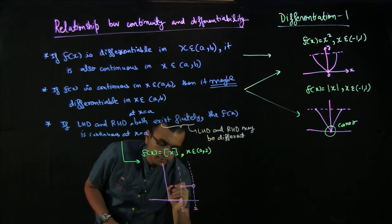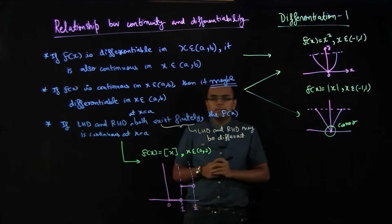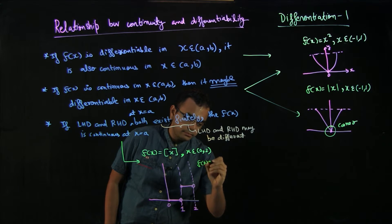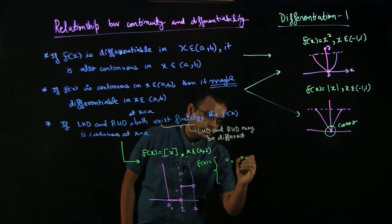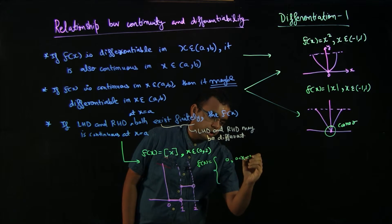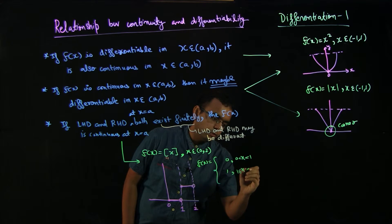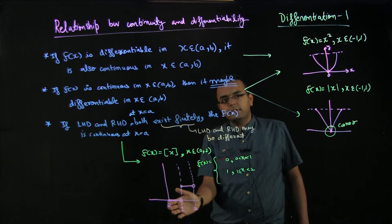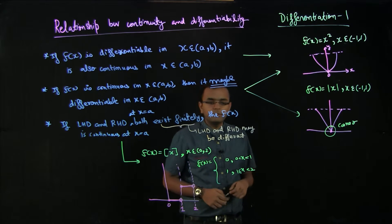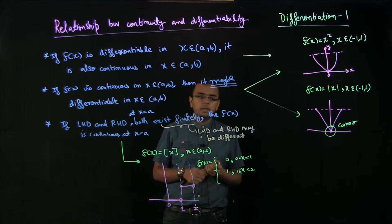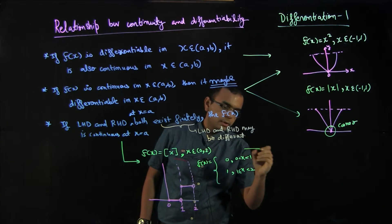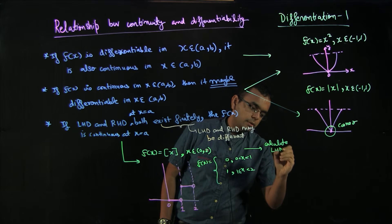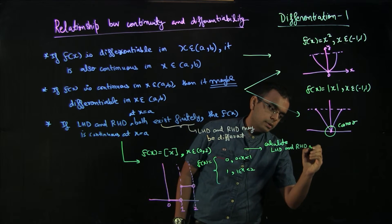The graph has f(x) = 0 for 0 ≤ x < 1 and f(x) = 1 for 1 ≤ x ≤ 2. So f(1) = 1 and f(1⁻) = 0. Let us discuss the differentiability at x = 1 by calculating LHD and RHD at x = 1.